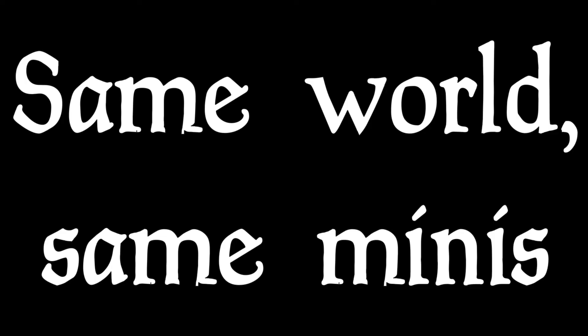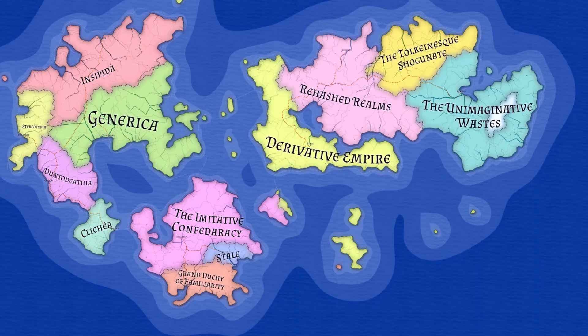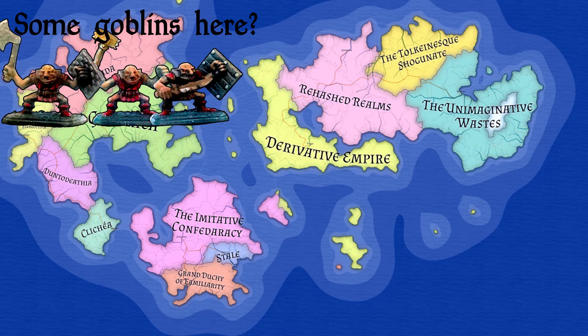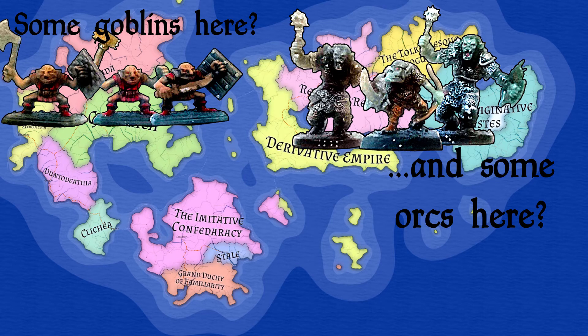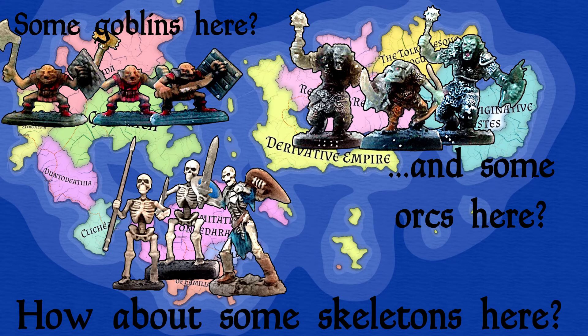Same world, same minis. If the two campaigns take place in the same world then it's likely the two parties will encounter similar enemy types, albeit at different times. This saves a lot of time when it comes to creating minis and terrain.